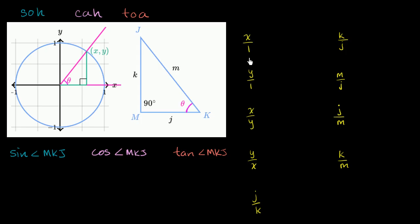Let's look first at x over 1. X is the x-coordinate — that's also the length of this side. Relative to angle theta, that is the adjacent side. What is 1? This is a unit circle, so 1 is the length of the radius, which for this right triangle is also the hypotenuse. So if we apply the SOH-CAH-TOA definition, x over 1 is adjacent over hypotenuse, and adjacent over hypotenuse is cosine. So that is equal to cosine of theta.